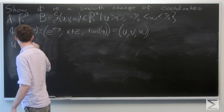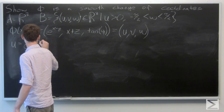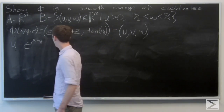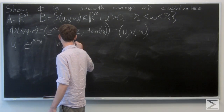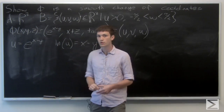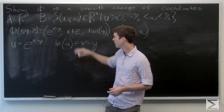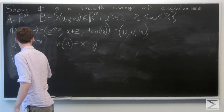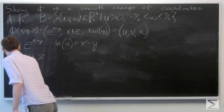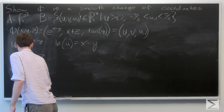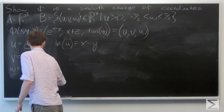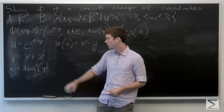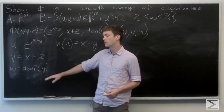We'll let u equal e to the x minus y, so the natural log of u is equal to x minus y. And we'll let v equal x plus z, and w equal the inverse tangent of y.